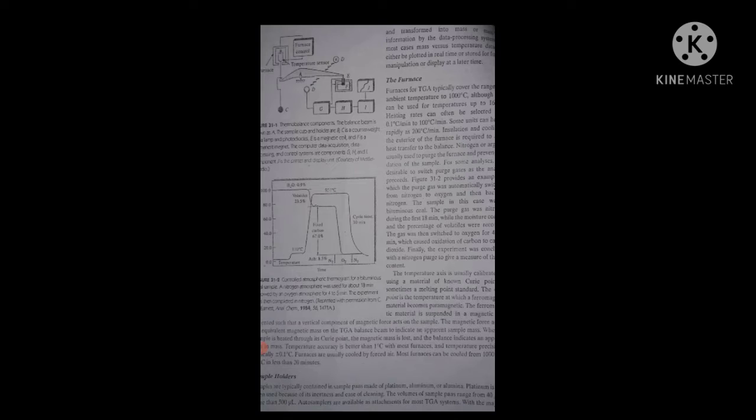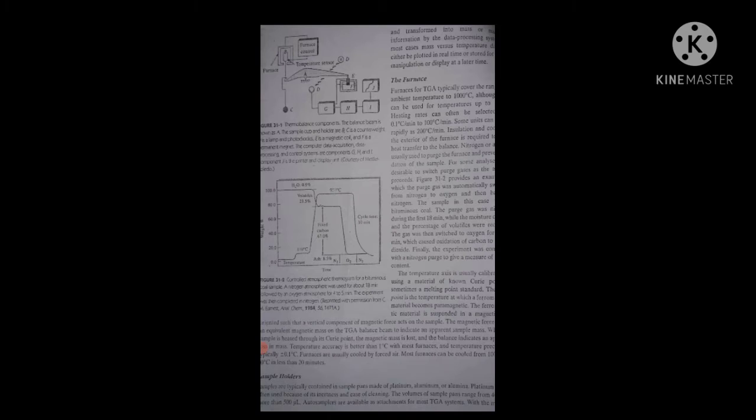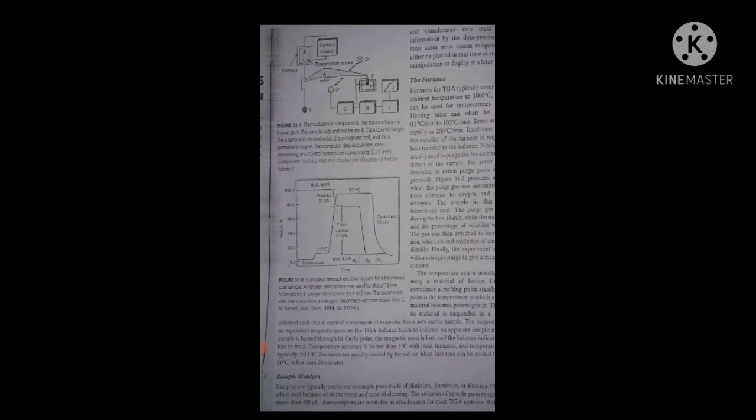The volume of the sample ranges from 40 microliters to 500 microliters. Auto samplers are also available as attachments for most TGA systems. With the majority of these units, all aspects are automated under software control. The sample pan loading and weighing, the furnace heating and cooling, and the pan unloading are totally automatic.